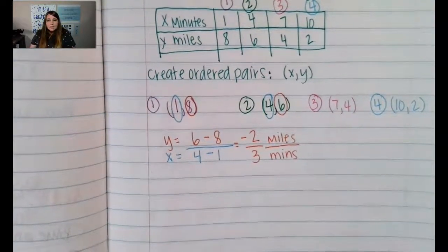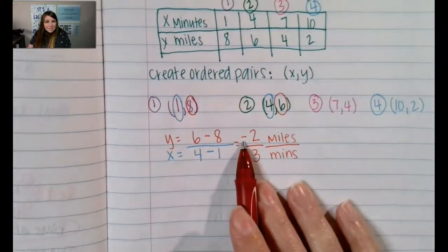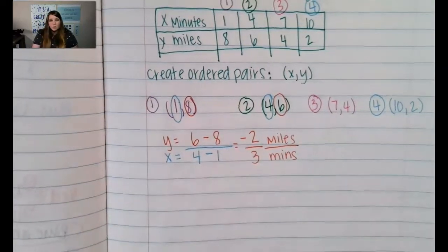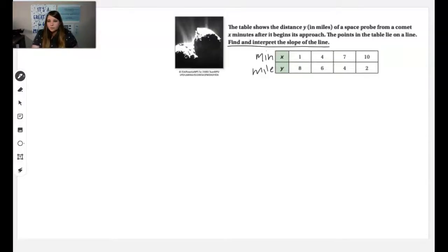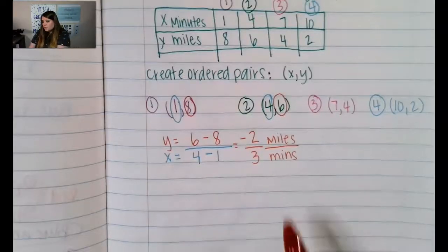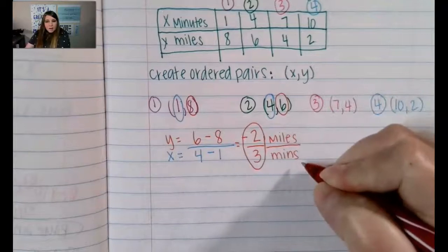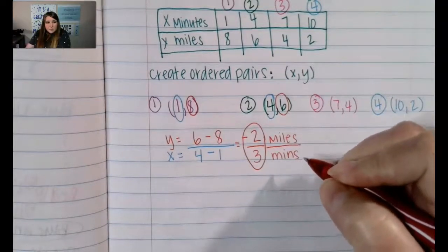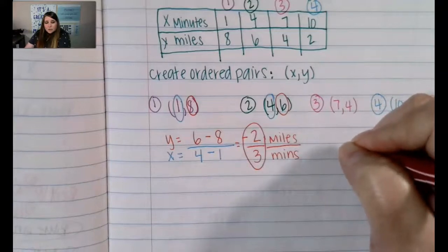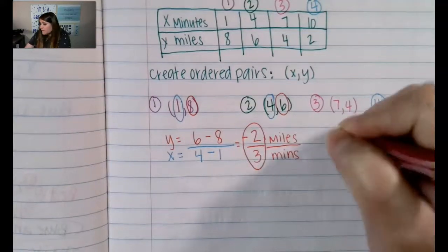As you read this slope it tells us that it's negative. Negative means decrease or goes down. Looking back at the question — the table shows the distance in miles of a space probe from a comet — our job is to use this slope to talk about miles and minutes. So this means that the comet decreases two miles every three minutes.